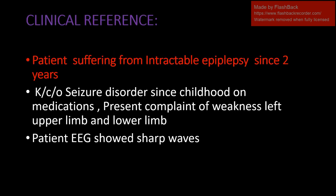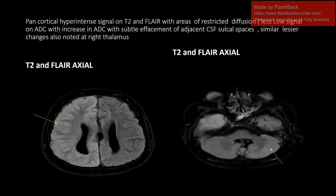The patient is suffering from intractable epilepsy since two years, a known case of seizure disorder since childhood, on medications, presenting with weakness of left upper limb and lower limb. Patient EEG shows sharp waves. We are seeing T2 axial imaging where pan-cortical diaschisis is noted with areas of diffusion restriction.